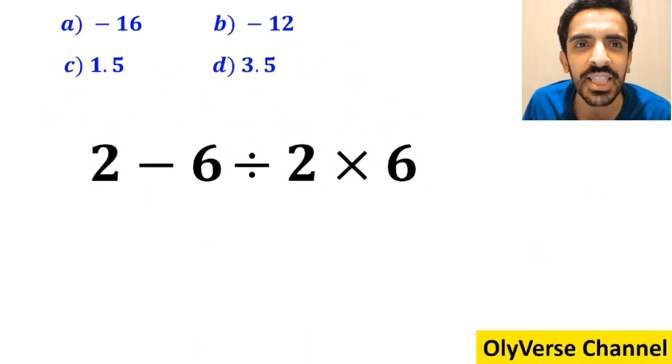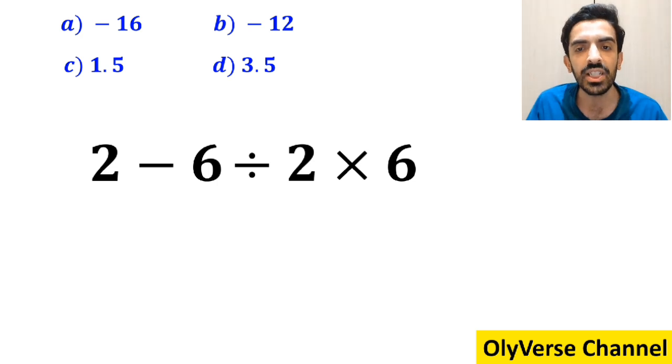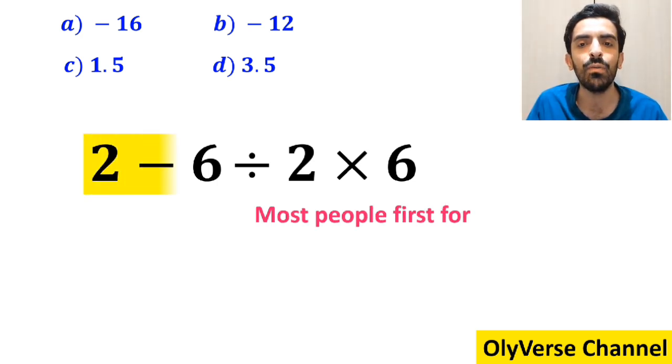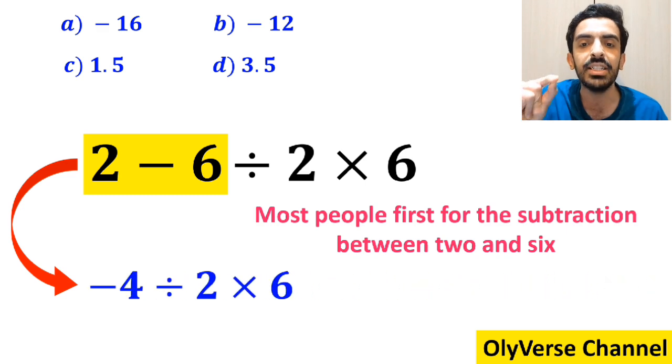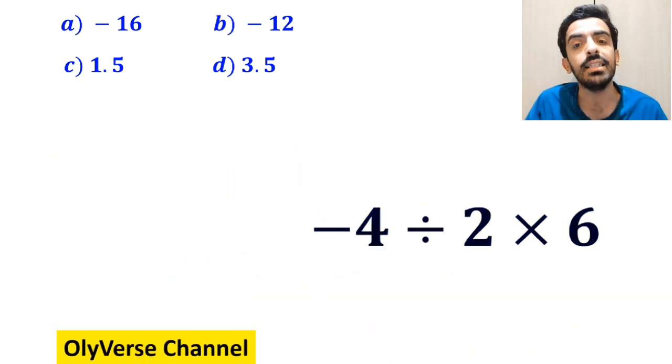Let's take a closer look and solve it together. To solve this question, most people first go for the subtraction between 2 and 6, and they rewrite it as negative 4 divided by 2 then times 6.